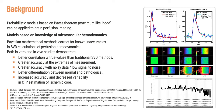In an effort to create more accurate results, probabilistic methods based on Bayes' theorem — Bayesian models — can be applied to brain perfusion imaging. These models are based on knowledge of microvascular hemodynamics. Bayesian mathematical methods correct for known inaccuracies. In vivo and in vitro studies have shown that Bayesian modeling provides better correlation with true values than traditional SVD methods.